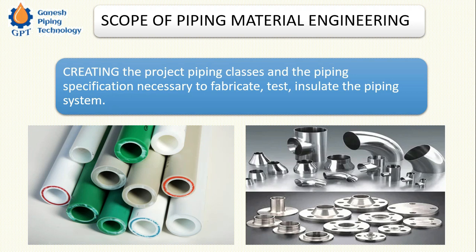Piping is associated with the process plant industry. In a process plant there is a definite process — for example, in a sugar factory, sugar cane is crushed in the sugar mills, producing sugar cane juice and the waste residue. This is processed and finally we get sugar. In between this process there are different equipment, and these equipment are connected by means of piping.